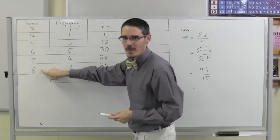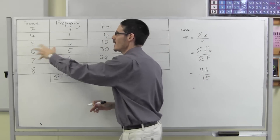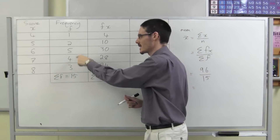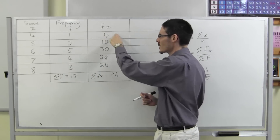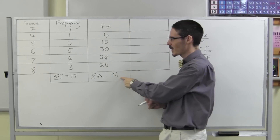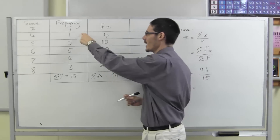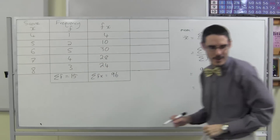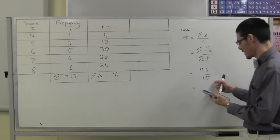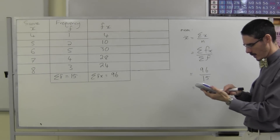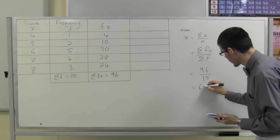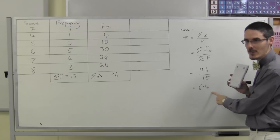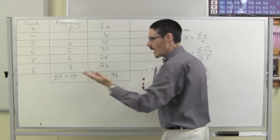Not these scores added up divided by 5, because this is shorthand — it's actually 4, 5, 5, 6, 6, 6, 6, 6, and so on. So to add the scores, I multiply first to make my job easier, then add those up, then do my division. 96 divided by 15 is 6.4. Does that sound like a reasonable mean for this data? Yes, it does.